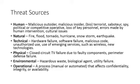We mentioned threat sources quite a bit — those are the things doing the bad stuff, and it could be unintentional as well. We can have human threat sources: a malicious insider or outsider, a terrorist, a spy, a political or competitive operative, loss of key personnel, errors made by human intervention — that's unintentional — or cultural issues. There are lots of types of human threat sources — a human doing something to take advantage of our vulnerability.